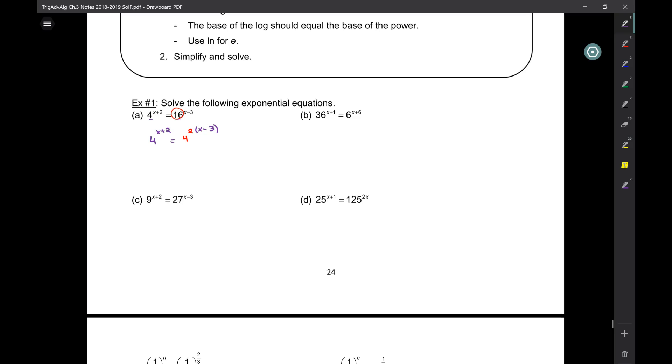Four squared is 16. That's why I can rewrite the 16 as four squared. So now I can set these two equal to each other. And I get x plus two equal to two times x minus three. Distribute, x plus two equals two x minus six. And what's x? Eight.